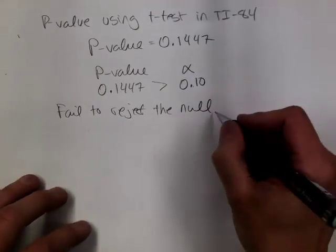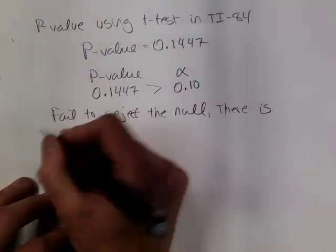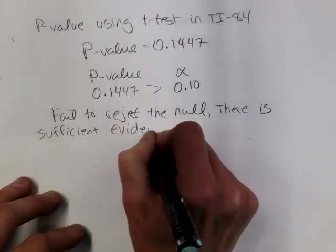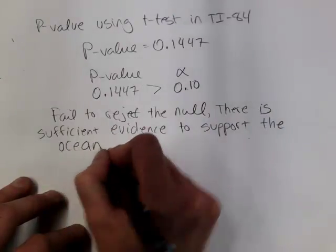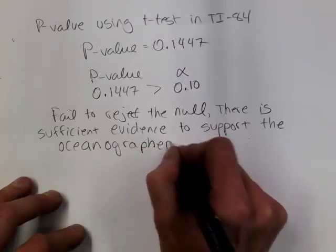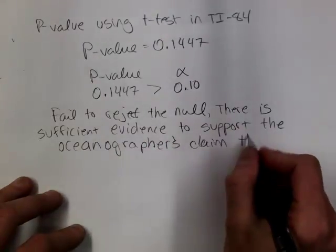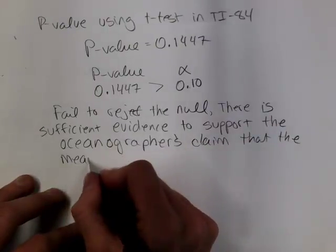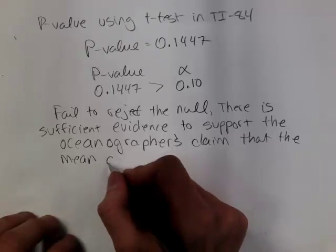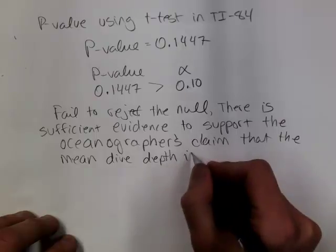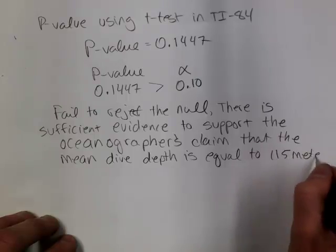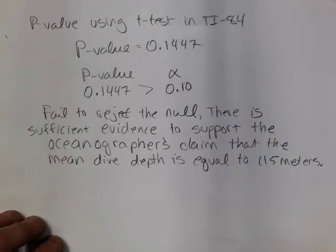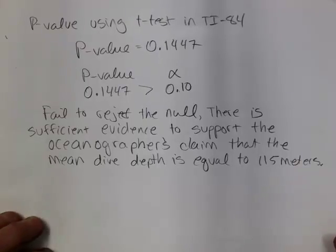So we would say there is sufficient evidence to support the oceanographer's claim that the mean dive depth is equal to 115 meters, for the North Atlantic right whale. Not to be confused with the North Atlantic left whale. Just kidding.